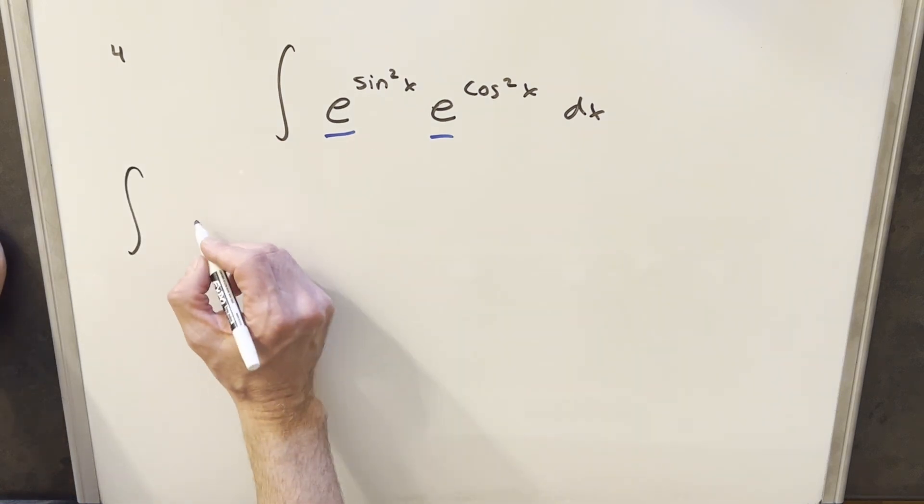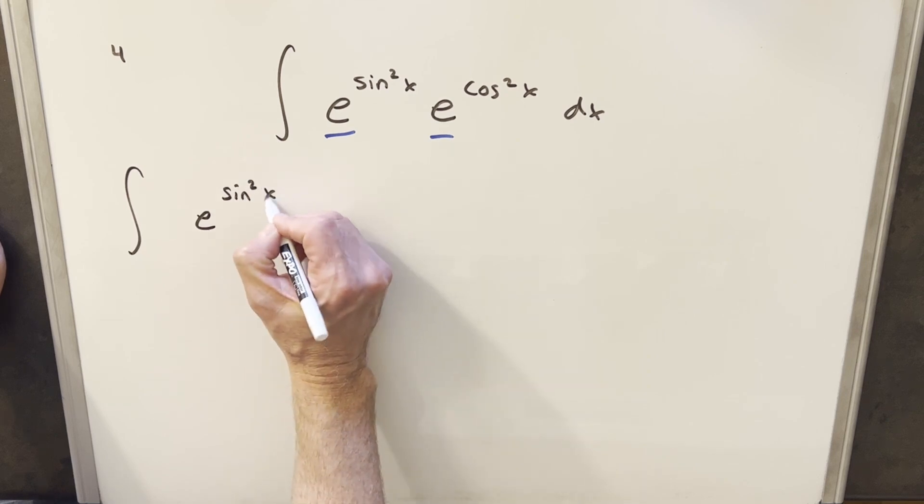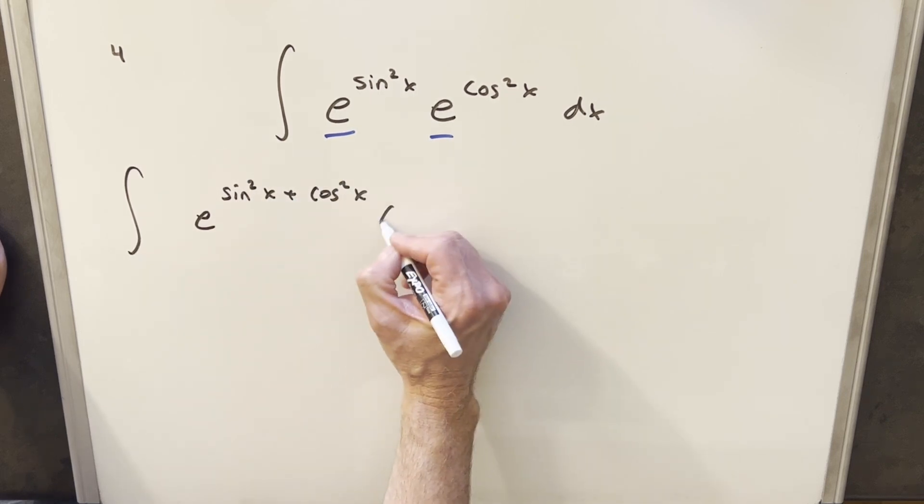If I do that and rewrite it and combine it with just one base, we just add the exponent. So for our exponent, we're going to have sine squared x plus cosine squared x dx.